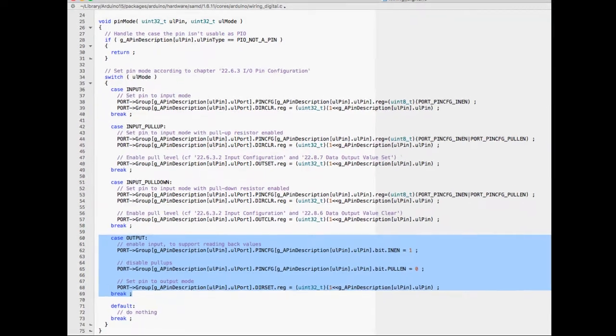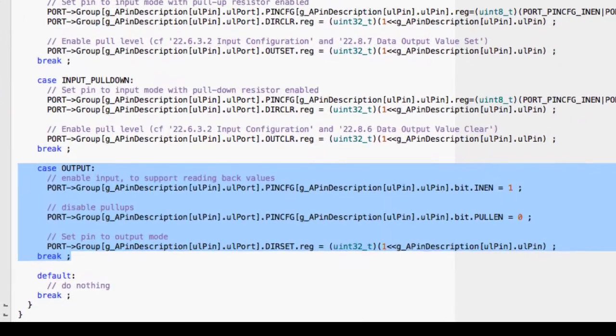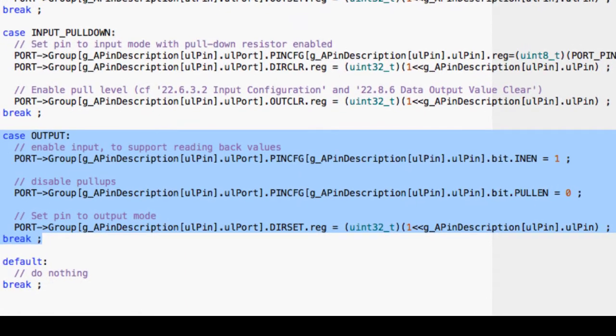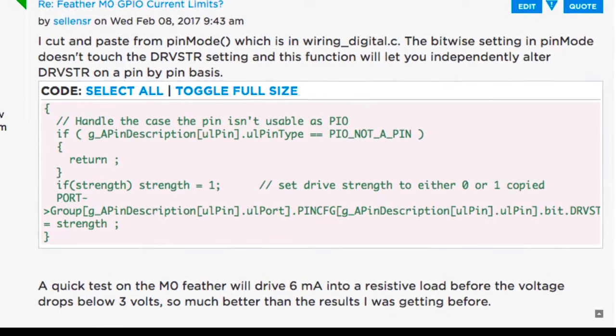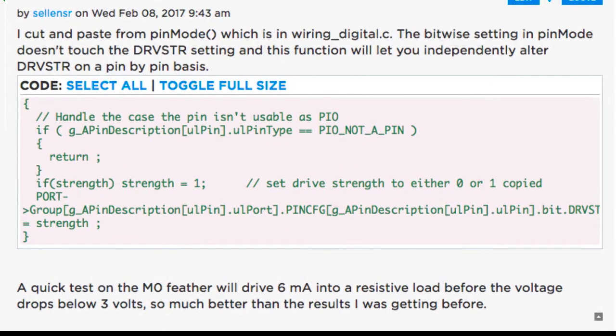After a lot of chasing around, I found myself looking at the source code for the pin mode function. We can see here where the output mode is defined. It sets a variety of items, but it doesn't set the drive strength at all. So that suggests to me that I could write a function that does set the drive strength, and use that in addition to pin mode to make sure that I can get the high current output. Being a good citizen, I reported back to the forum once I'd solved the problem, just in case anybody else needed to know.